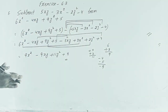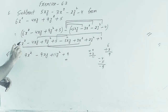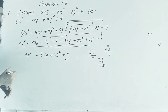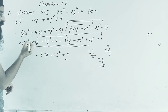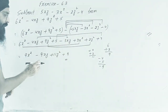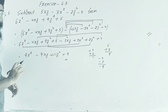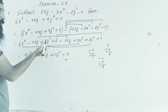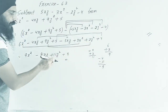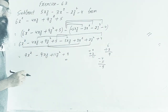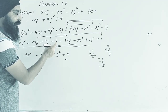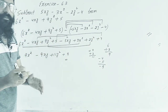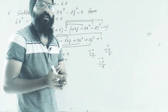We collect the like terms: 6x square plus 3x square equals 9x square. Minus 4xy minus 5xy gives minus 9xy. Then 9y square plus 2y square gives 11y square. And the constant term: plus 5 plus 4 equals 9. So the final answer is 9x square minus 9xy plus 11y square plus 9. That was question number 5.